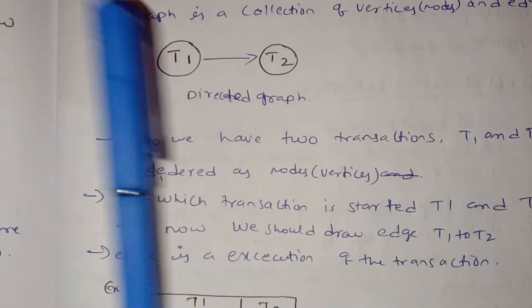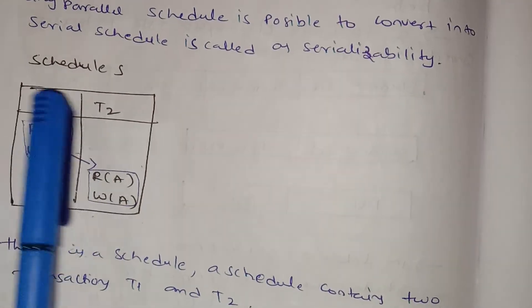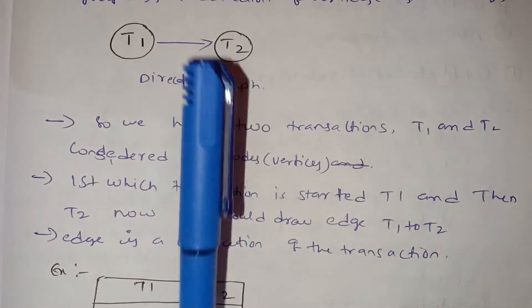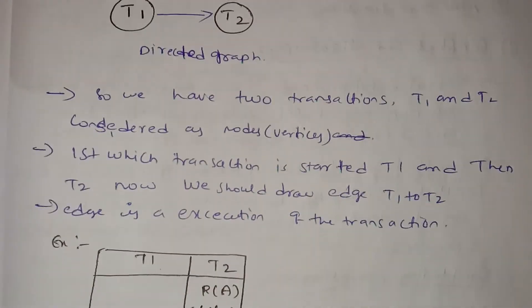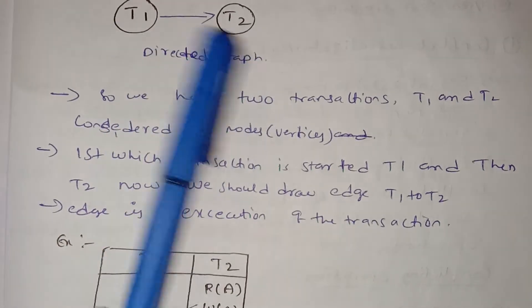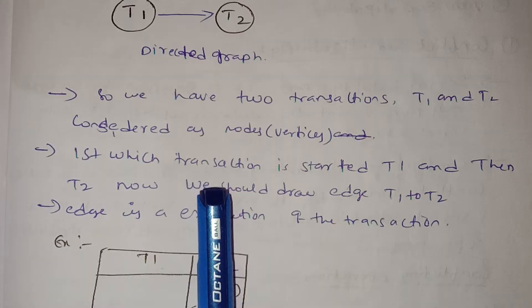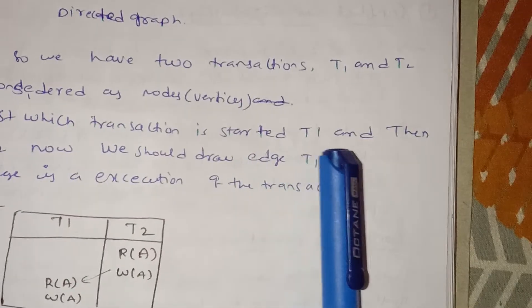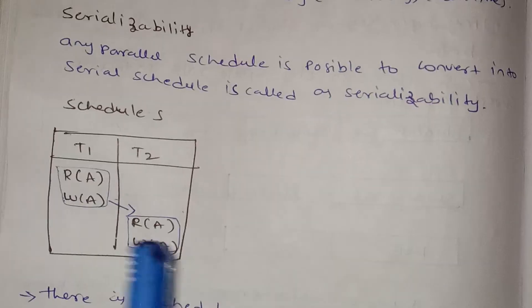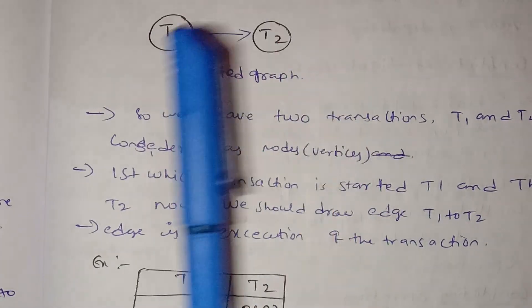Transactions T1 and T2 are considered as nodes or vertices. Next, we look at which transaction starts first. T1 starts first, so we draw an edge from T1 to T2 in the Precedence Graph.